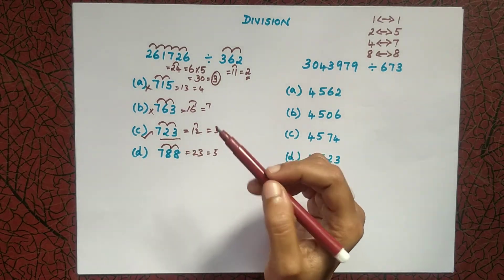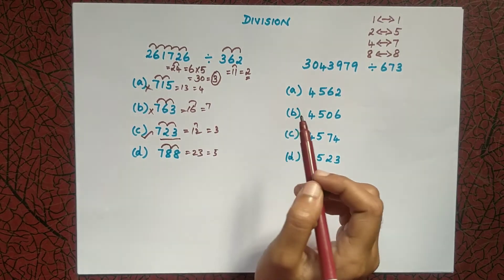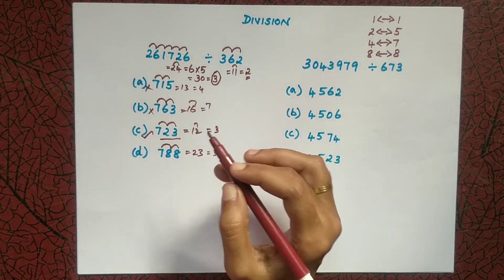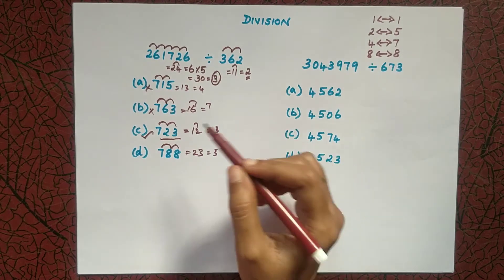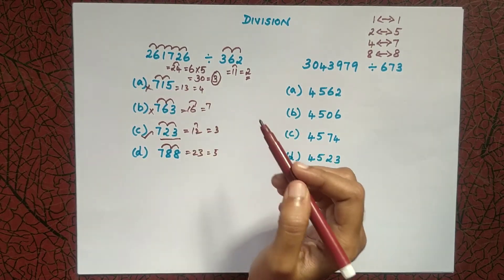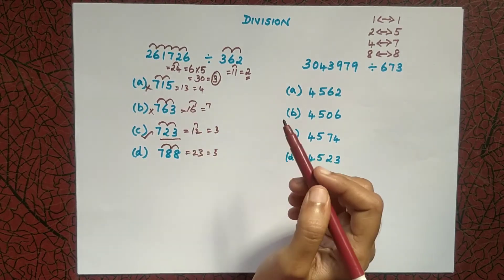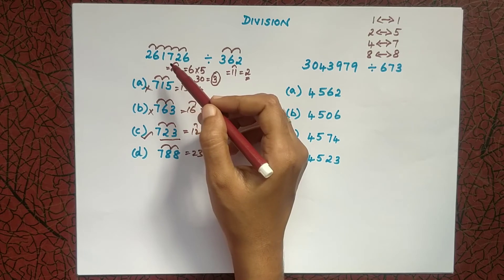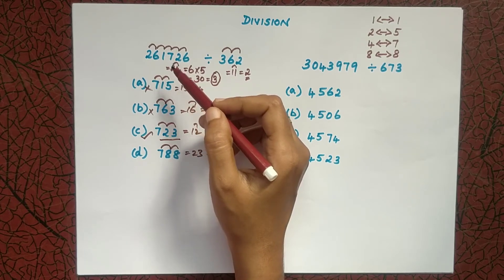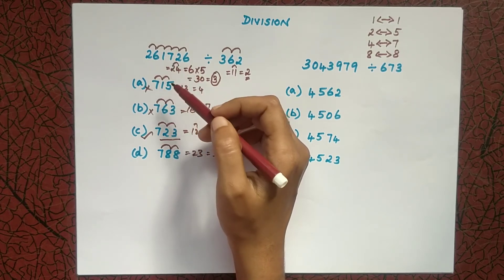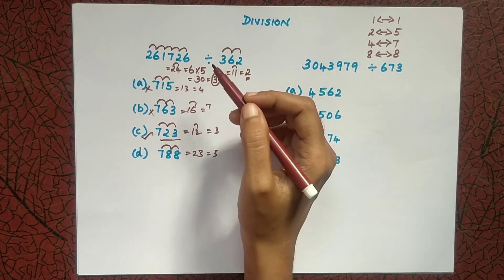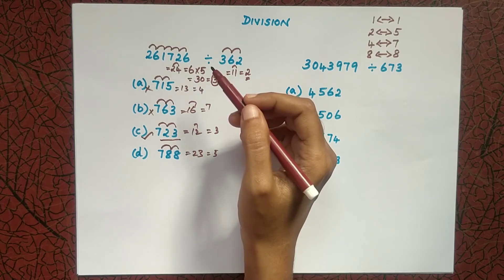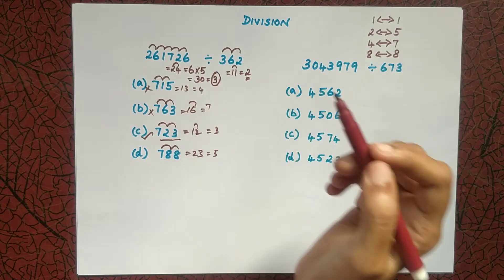So the quotient of this division is 723. Without dividing anything, we can just find it by adding each digit. For even the addition step, I already covered that addition trick in my previous video — if you haven't seen it, please check the description for the video link.